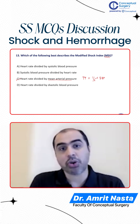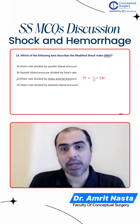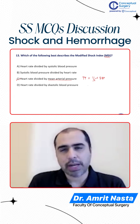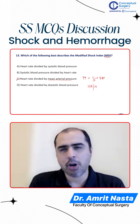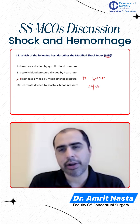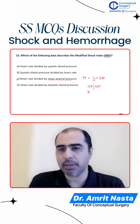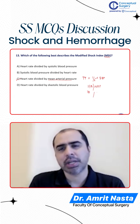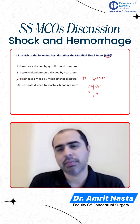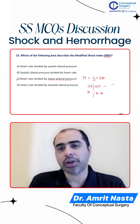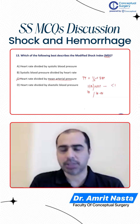The modified shock index is heart rate divided by MAP. How much should the heart rate be in a normal person? It should be like 70. How much should the mean arterial pressure be? It should be something like 60 to 80. So in most of us, the modified shock index should be less than 1, approximately.